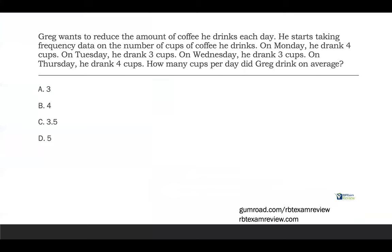Question one. Greg wants to reduce the amount of coffee he drinks each day. He starts taking frequency data on the number of cups of coffee he drinks. On Monday, he drank four cups. On Tuesday, he drank three cups. On Wednesday, he drank three cups.